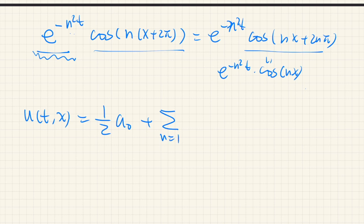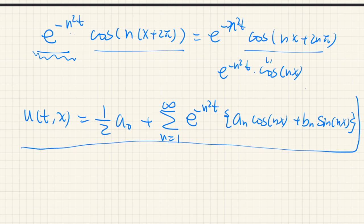Plus all these functions from n equal to 1 to infinity. And exponential of negative n squared t, and some constant an because it's a linear combination and cosine nx, and some constant bn and sine nx. So this is the general solution of the heat equation.